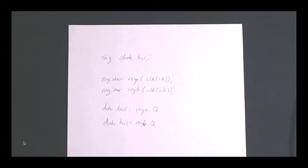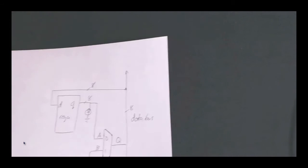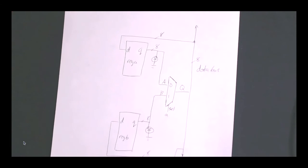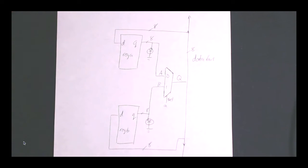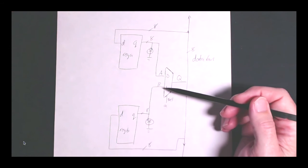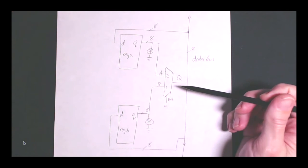So it occurred to me that maybe a way to solve this problem might be something like this. So take away the tri-state buffers and instead replace them with a multiplexer.